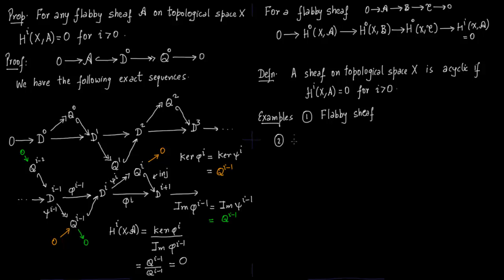And the second example is from algebraic topology. I have discussed this in my lectures on algebraic topology and cohomology. So Rn is homotopically equivalent to a point. And this is just the constant sheaf of integers, and for I greater than 0 this is 0.